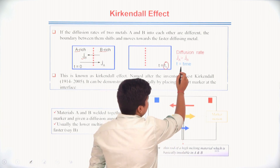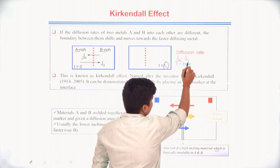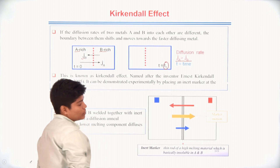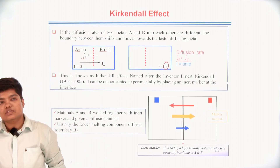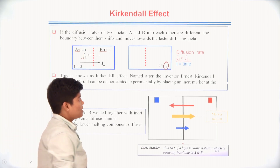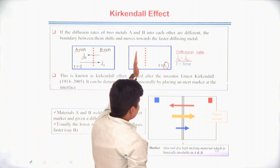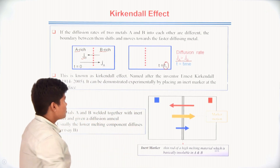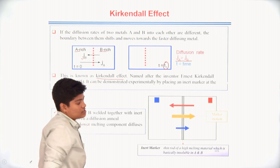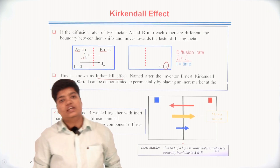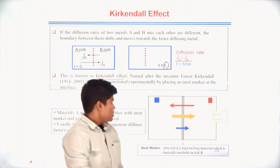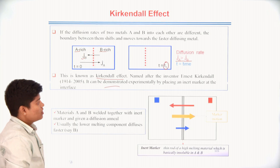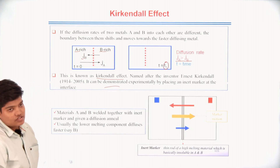Since the diffusion rate of A is more than the diffusion rate of B, we can say J_A is greater than J_B. After the time interval you can see the boundary shifts towards A, and this is known as the Kirkendall effect. This effect is named after the scientist Ernest Kirkendall, and it can be experimentally demonstrated by placing an inert marker.